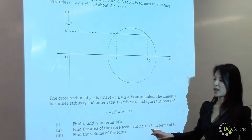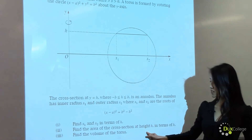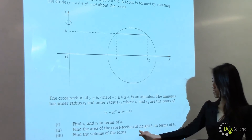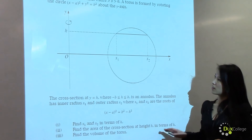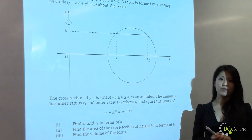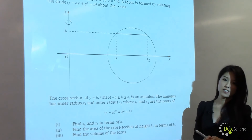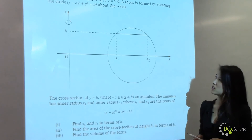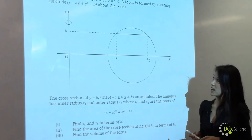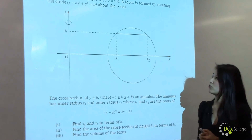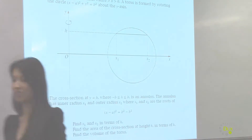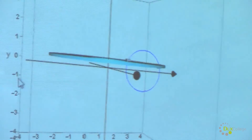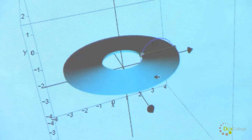In part two, we have to find the area of the cross-section at height h in terms of h. As we saw in the animated representation, the cross-section forms a disk. So we have to find the area of this disk at height h.